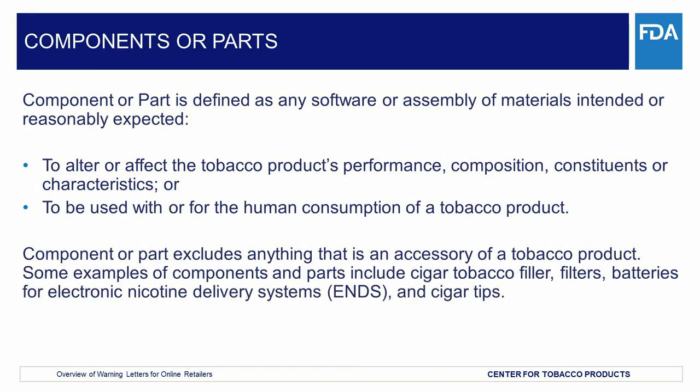The deeming rule defines component or part and accessory. The term component or part is defined as any software or assembly of materials intended or reasonably expected to: 1. alter or affect the tobacco product's performance, composition, constituents, or characteristics; or 2. be used with or for the human consumption of a tobacco product. Component or part excludes anything that is an accessory of a tobacco product. Some examples of components or parts of the newly regulated products could include cigar tobacco filler, filters, batteries for electronic nicotine delivery systems, or ENDS, and cigar tips.